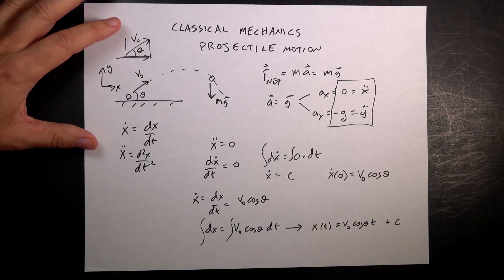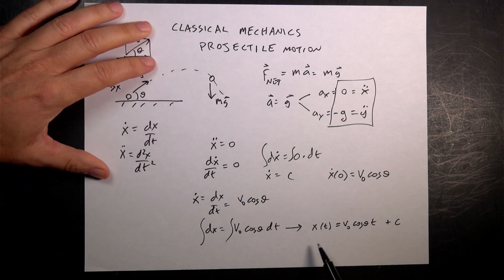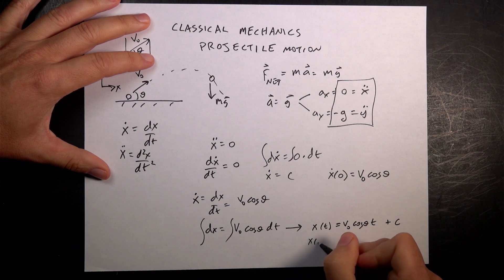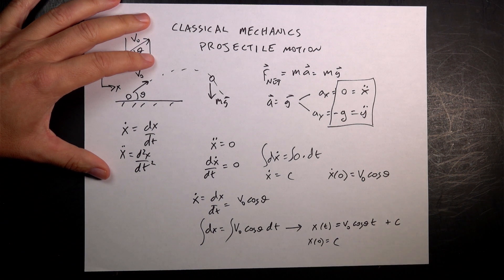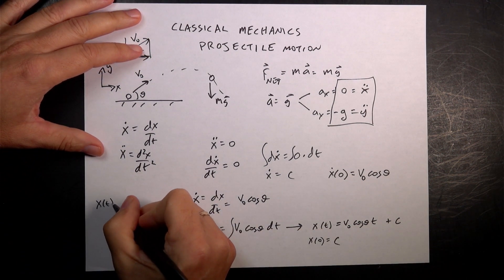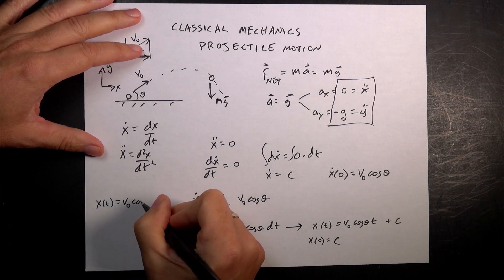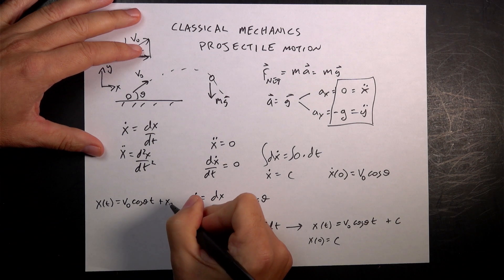I'm going to call it the same constant — I know that's a bad idea — and then I say x at time t equals zero: if I put in t equals zero, this term goes away and I get c. So this gives me the following expression: x as a function of t is v zero cosine theta times t plus x zero.